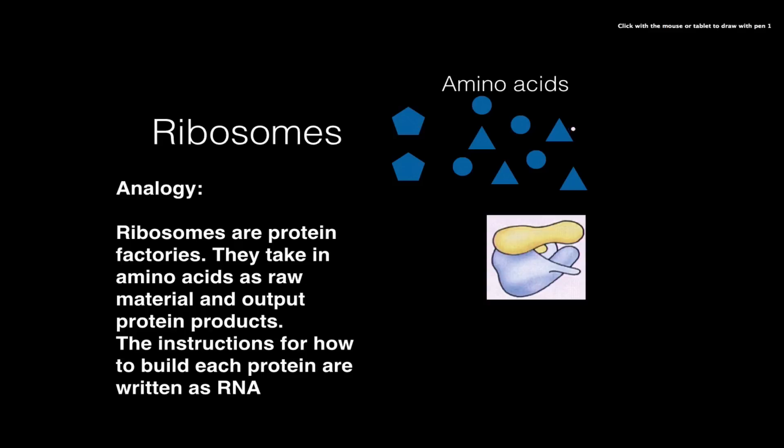Ribosomes are protein factories. What they're going to do is take in these amino acids and hook them together with peptide bonds to output or to make a polypeptide or a protein.